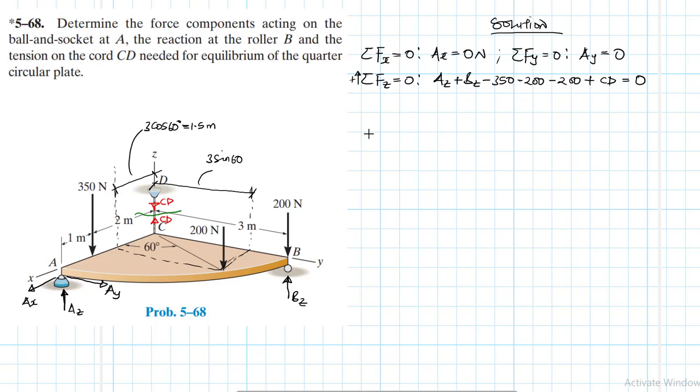So we have this particular equation. That's AZ plus BZ minus 350 minus 200 minus 200 plus CD. Let's write it as AZ plus BZ plus CD. And then when we sum up this 350, 200, and 200, it gives us 750, equal to zero.